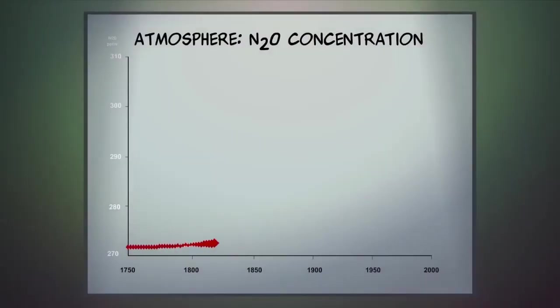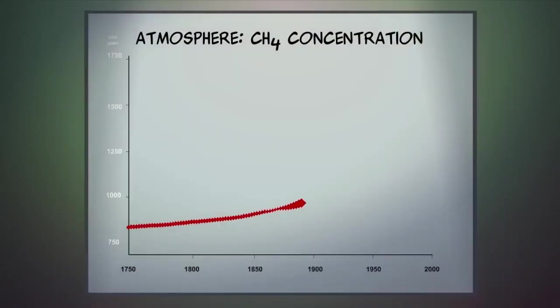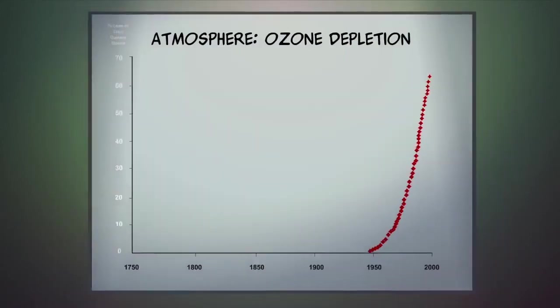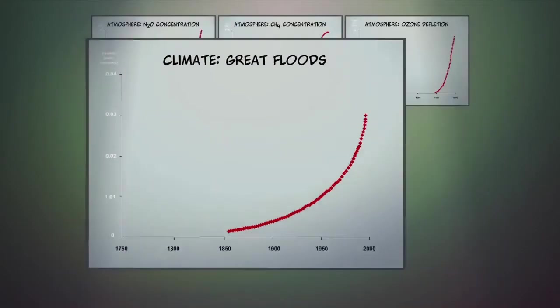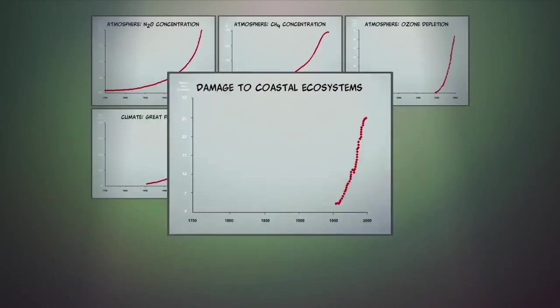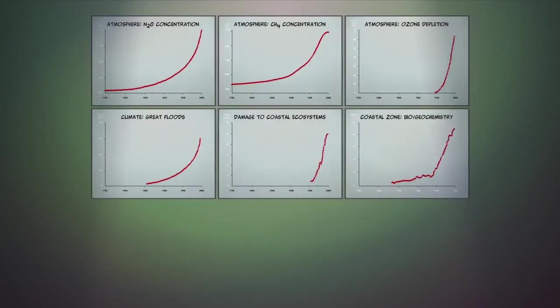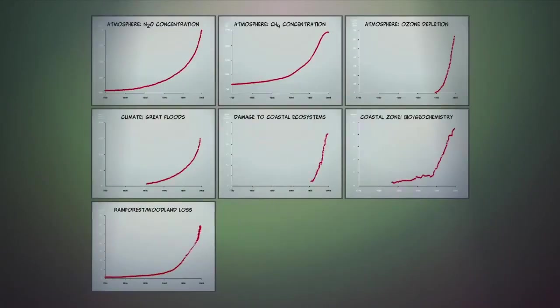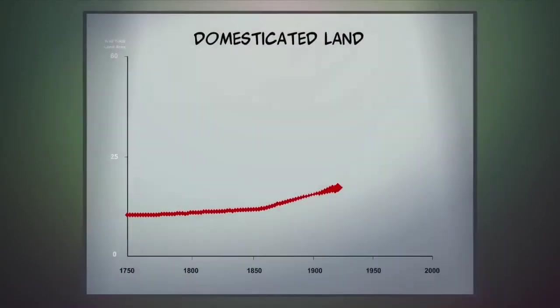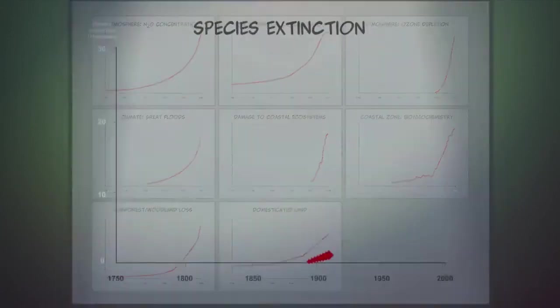Economic expansion has resulted in increases in atmospheric nitrous oxide and methane, ozone depletion, increases in great floods, damage to ocean ecosystems, including nitrogen runoff, loss of rain forest and woodland, increases in domesticated land, and species extinctions.